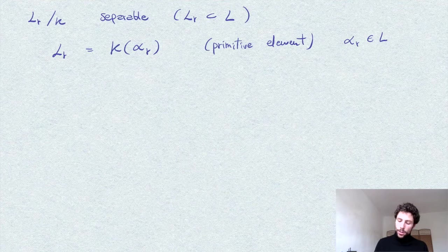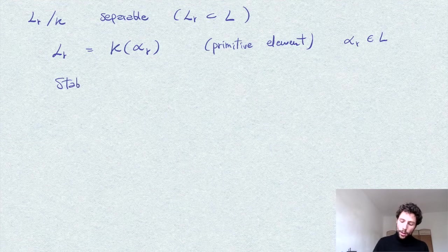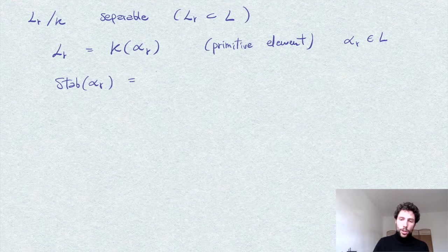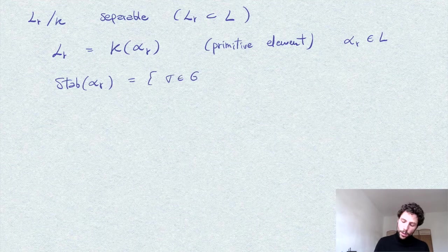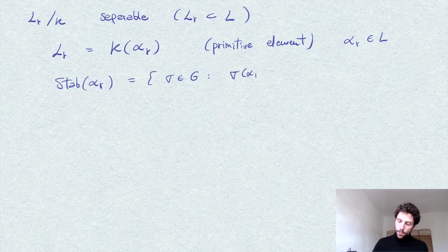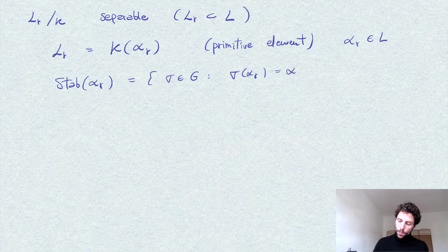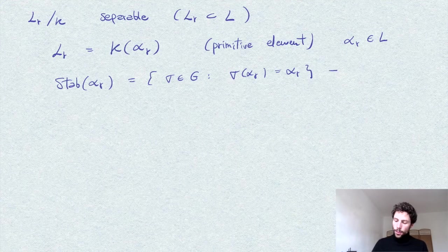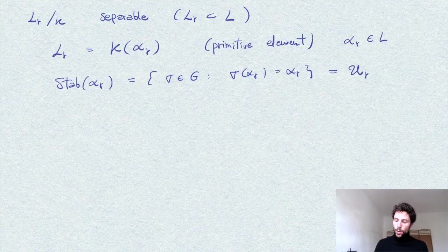So we have for each R we have this alpha_1 up to alpha_n, elements in L. And of course by construction, if we consider the stabilizer group in the Galois group of this element, so by definition the set of sigma in G which fix alpha, then this is precisely UR, what we defined before.